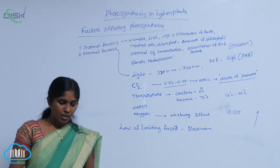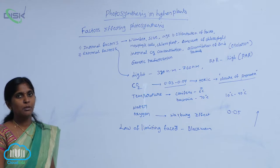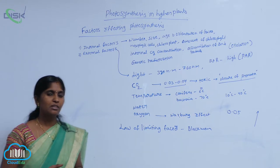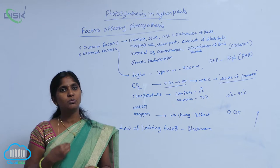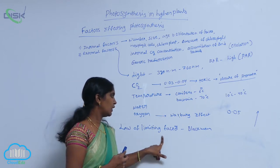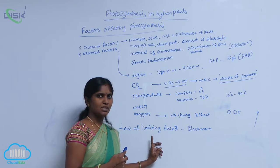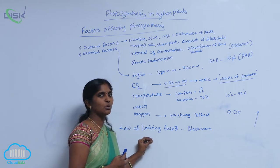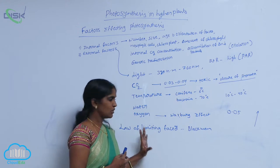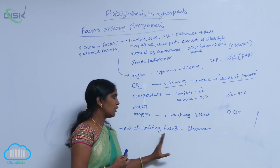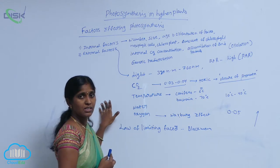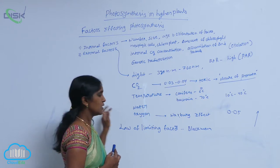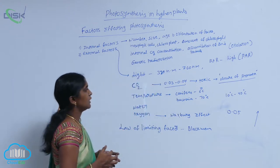What is limiting factor? If a process depends on multiple factors, then the process is affected by the factor which has the very minimal value — that is called the law of limiting factor. The factor which has the very less concentration will show impact on the complete process. According to the law of limiting factor, if carbon dioxide is taken as a limiting factor, the limitation must be 0.03 to 0.04 concentration. That is given by scientist Blackman.